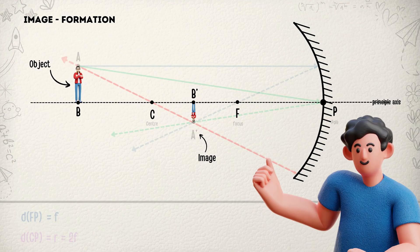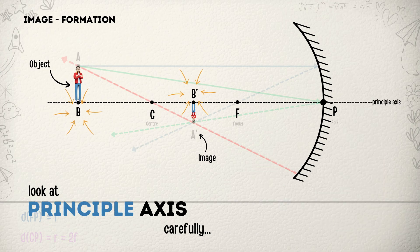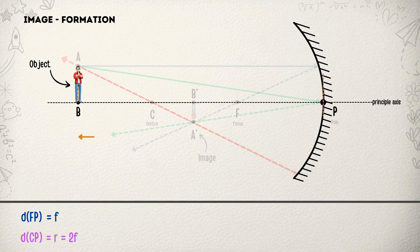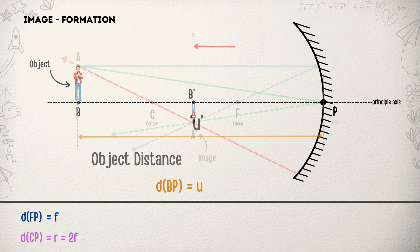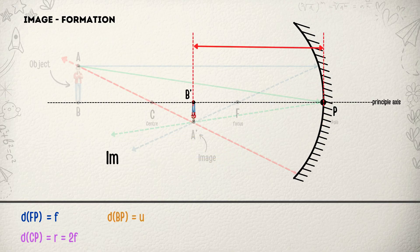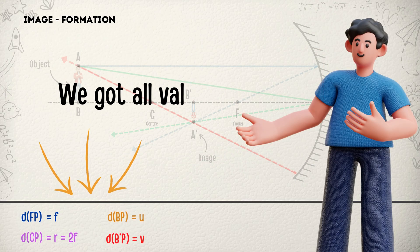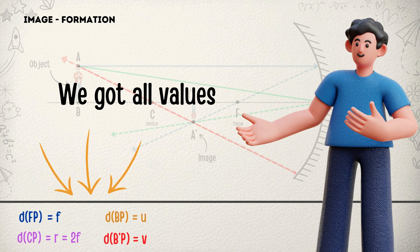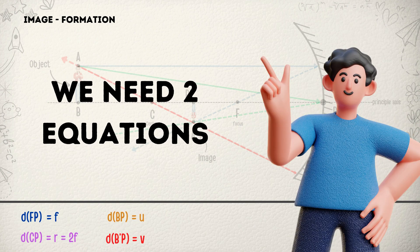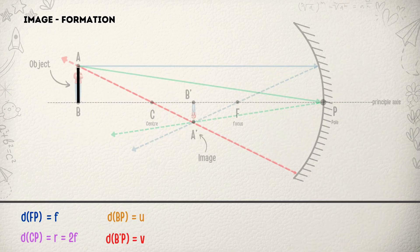Now look at the principal axis carefully. We got two new points, point B and B'. Distance PB is called object distance, which we will denote by letter u. And distance PB' is called image distance, which we will denote by letter v. Now we have 4 values. We just need two more equations to derive the mirror formula, which we will identify based on our triangle geometry.